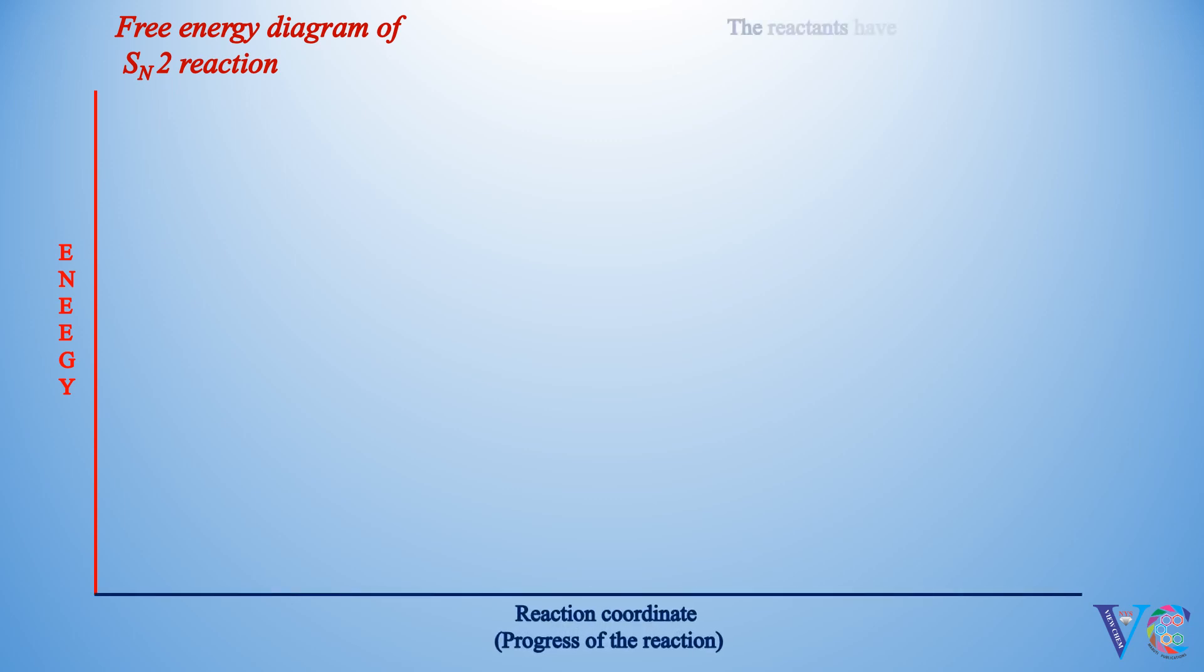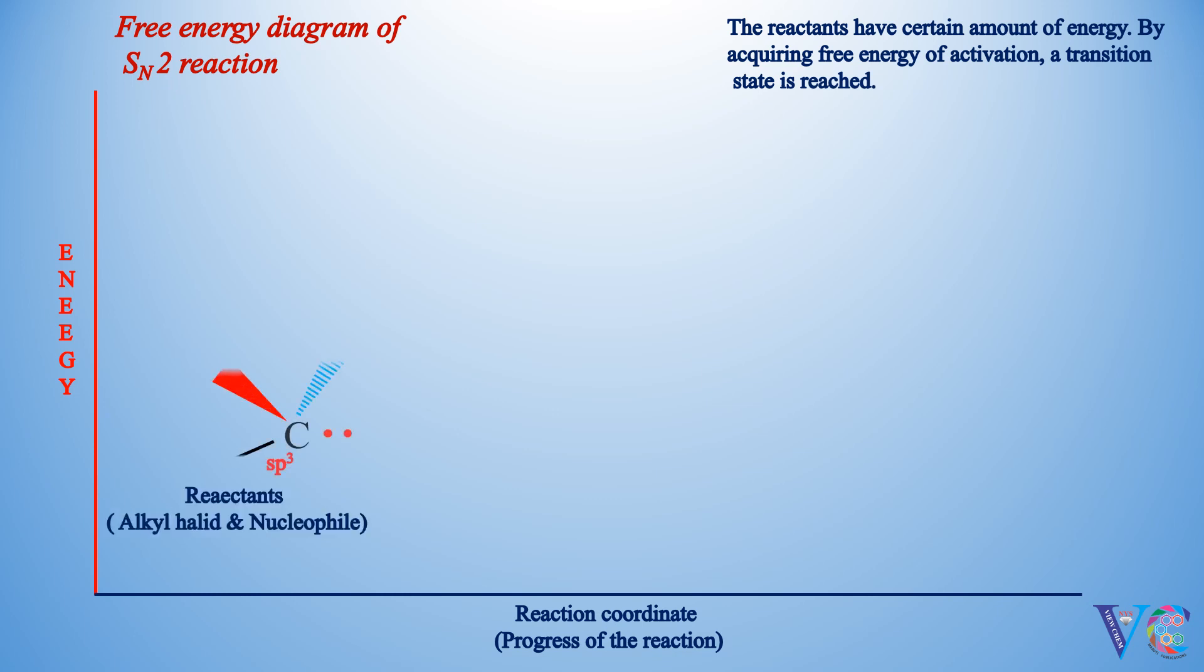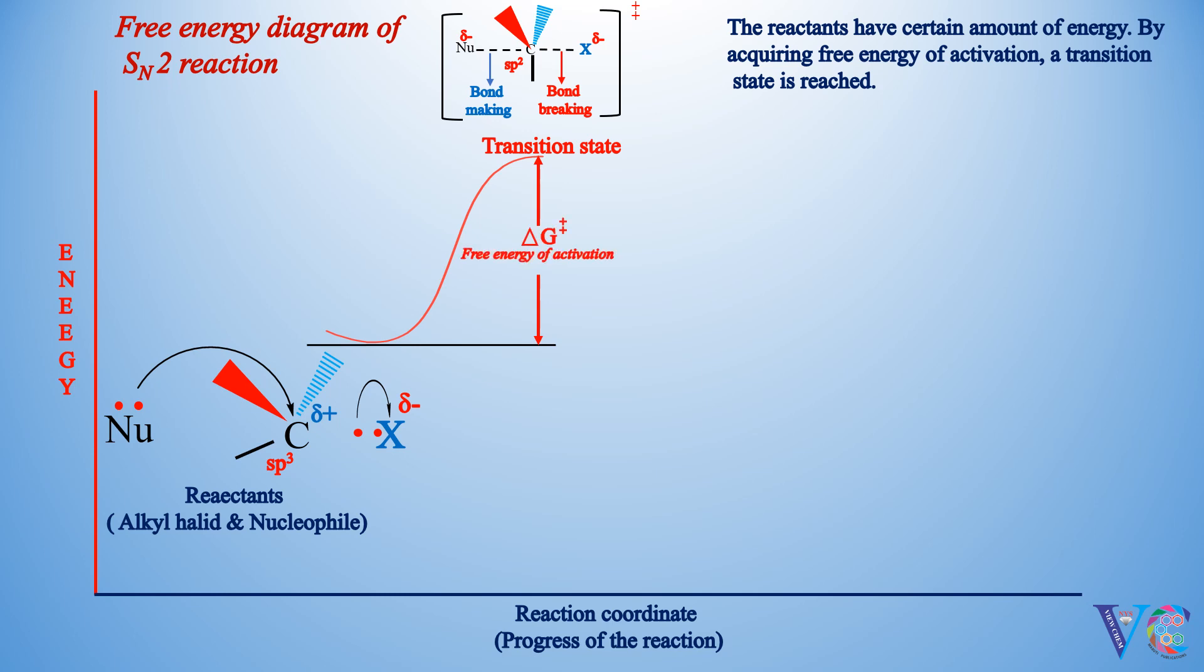Free energy diagram of SN2 reaction. The reactants have certain amount of energy. By acquiring free energy of activation, a transition state is reached. The rate of reaction depends on the activation energy. The difference in the energy of reactants and the transition state is activation energy.